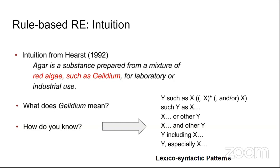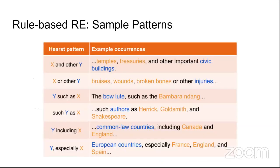Lexico-syntactic patterns — combining lexical (word) and syntactic (sentence structure) information — were an early approach. For instance, 'agar is a substance prepared from a mixture of red algae such as gelidium' uses the pattern 'Y such as X.' Rules like these were coded by Hearst in an earlier paper. However, they require hand-building patterns for each relation, are hard to write, and are domain-dependent, leading to very low accuracy on hyponymy extraction.